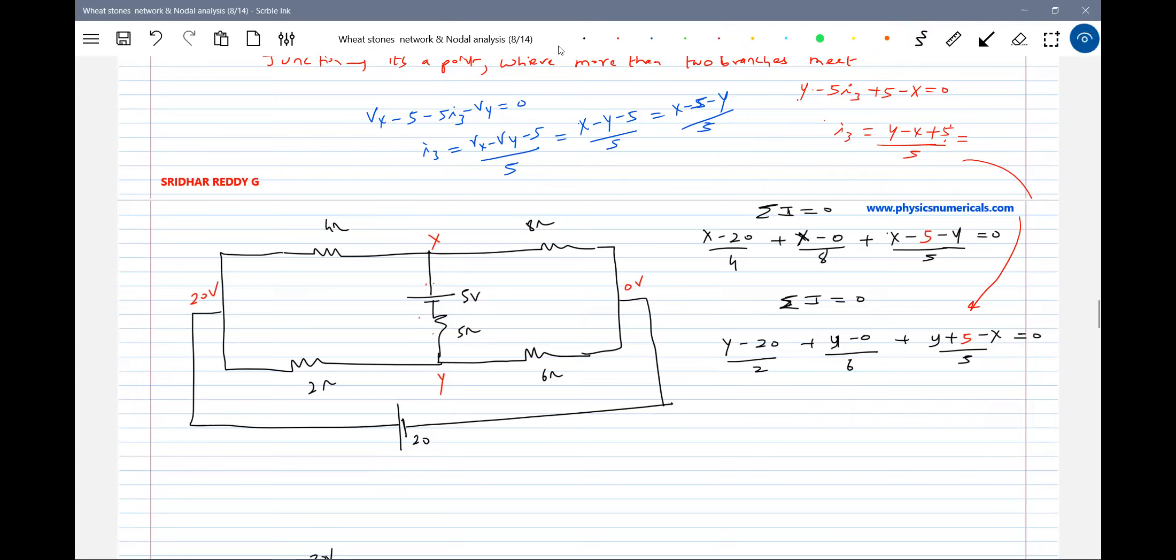If you find it very difficult, you can straightaway take help of writing the equation like this: Y minus 20 by 2, Y plus 5 minus X divided by 5, Y minus 0 by 6. Solving X and Y will get the unknown things VX and VY. Once you know VX and VY, you can calculate the current in all the branches. This is nodal analysis. These are the nodes, X and Y.